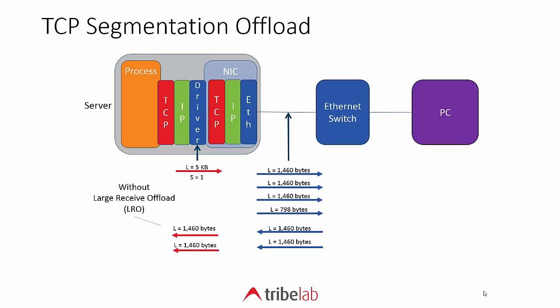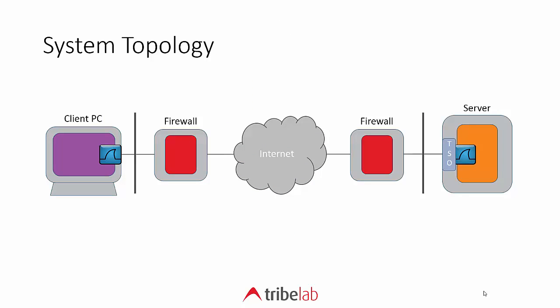One important factor is that the sequence numbers still all match up. The 5-kilobyte segment — let's imagine it has a sequence number of one. When we look on the outside of the NIC, the first outbound packet will have a sequence number of one, and then the sequence numbers follow. I captured matching traces in a system just like this: I've got a client PC talking across the internet to a web server. I'm capturing on the client PC and on the server, specifically on the process side of the TCP segmentation offload function.